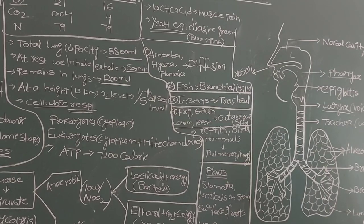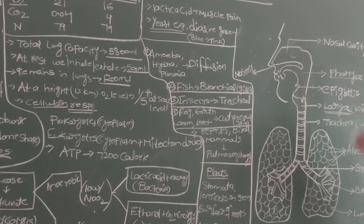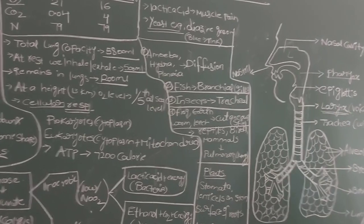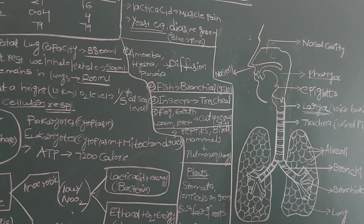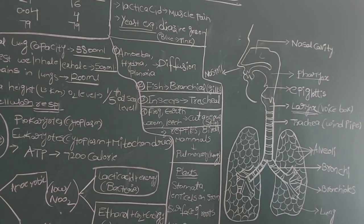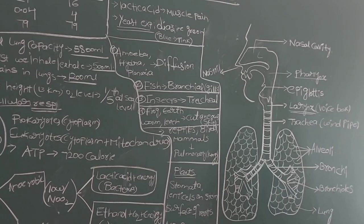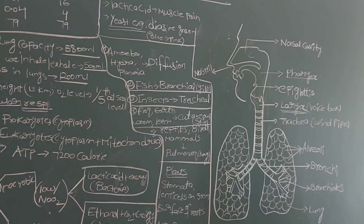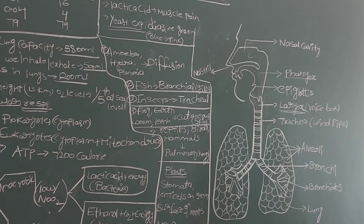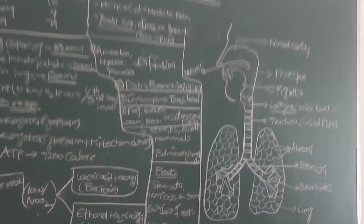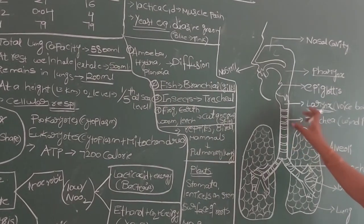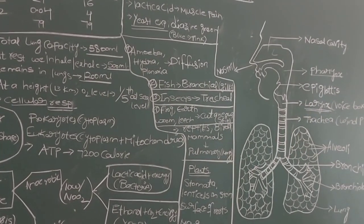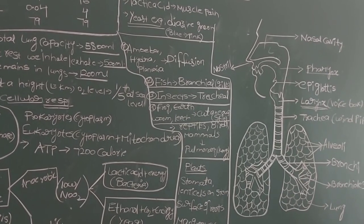The larynx is made up of vocal cords — muscles that produce different sounds while speaking or singing. All the different sounds we produce are made only with the help of the vocal cord muscles in the larynx. That is why the larynx is specially called the voice box or sound box.